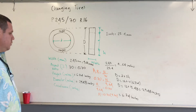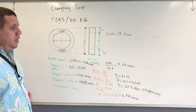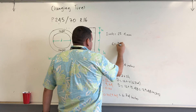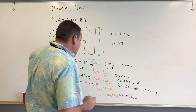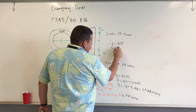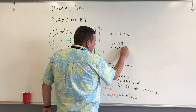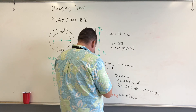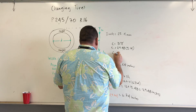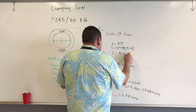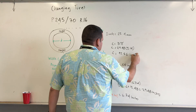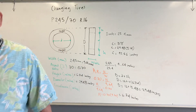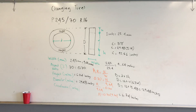For the circumference, we multiply the diameter by pi. So 29.48 times 3.14 gives a circumference of approximately 92.56 inches. This is the circumference of the tire.